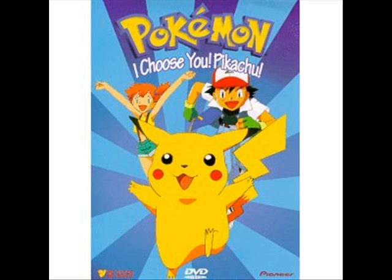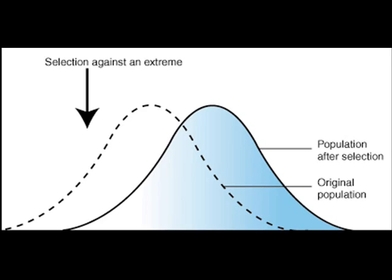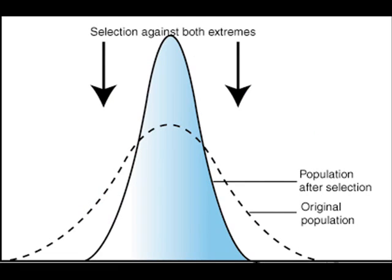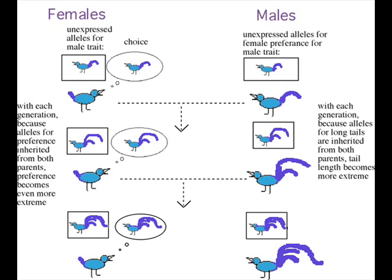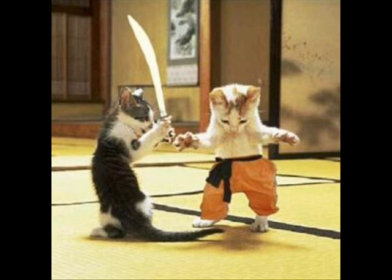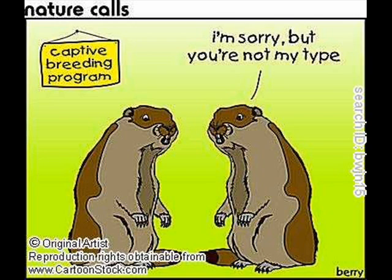There are three modes of selection: directional, disruptive, and stabilizing. Directional selection favors one extreme of the phenotypic range and drives evolution toward it. Disruptive selection favors the extremes while intermediate phenotypes are not favored. Stabilizing selection acts against the extremes and favors the intermediate variance. Sexual selection is the selection for traits that enhance an individual's chances of obtaining mates and can lead to sexual dimorphism — distinctions between males and females based on secondary sexual characteristics. Sexual selection may involve intrasexual selection, where individuals of the same sex compete for mates, or intersexual selection, where females discriminate in choosing a mate based on traits reflecting the male's general health and genetic quality.